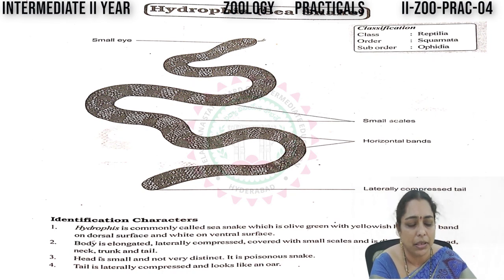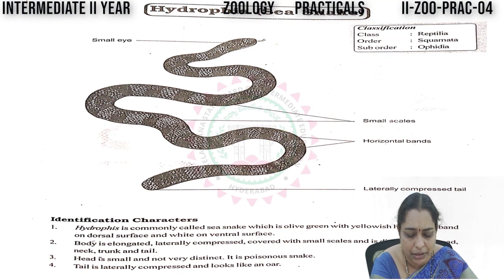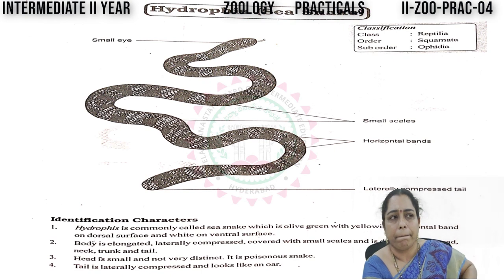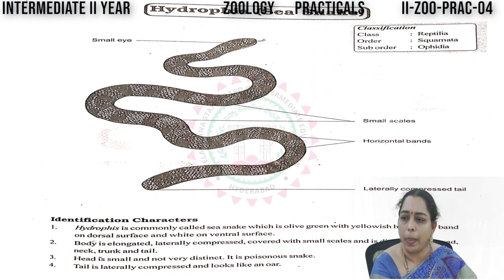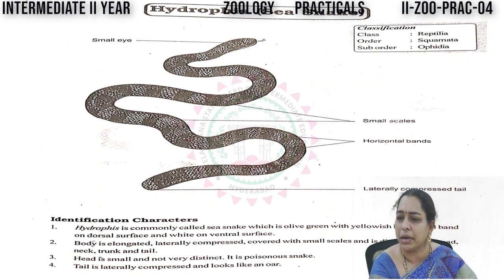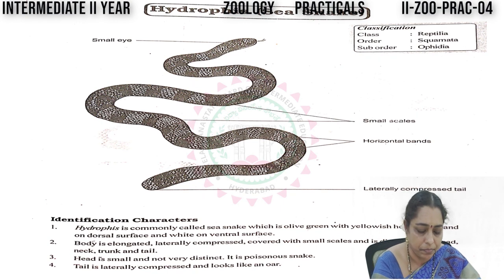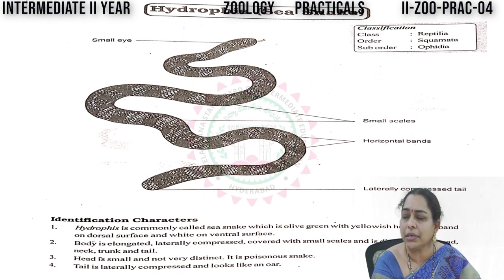You draw the diagram showing: small eyes, small scales, horizontal bands, and laterally compressed tail — the unique feature of the Hydrophis or sea snake. The laterally compressed tail is the key identification character of the sea snake.